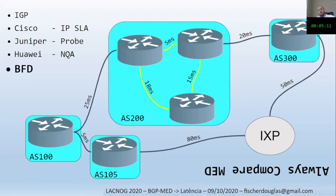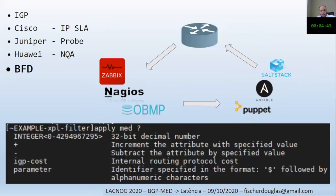Depending on where you go, you will have a different latency, and that should have an impact when choosing the route. Even taking the worst path of 18 plus 15 milliseconds, it would still be better than going through the IXP. This is especially important for Brazilian ASNs connecting to remote IXPs, because we have a very special situation there — and latency-based analysis would be perfect for this.